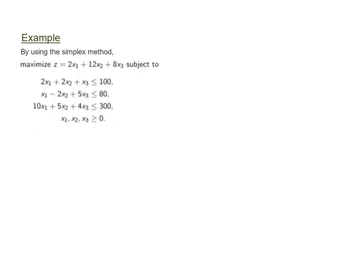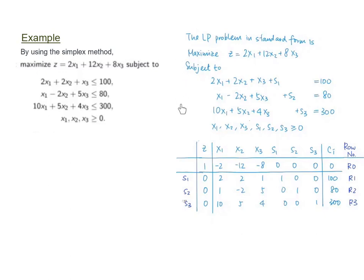In this video, we would like to maximize z equals 2x1 plus 12x2 plus 8x3 subject to all these constraints, with x1, x2, and x3 greater than or equal to 0. The constraints consist of less than or equal to inequalities, so for each constraint we add a slack variable so that those constraints can be stated as an equation. This is the corresponding system in standard form.